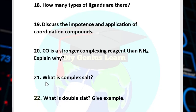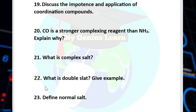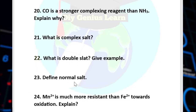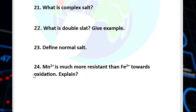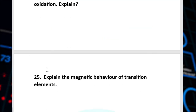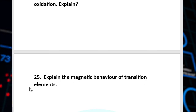Question number 21: What is a complex salt? Question number 22: What is a double salt? Give an example. Question number 23: Define normal salt. Question number 24: Manganese 2+ ion is much more resistant than ferrous 2+ ion to oxidation — explain why. Question number 25: Explain the magnetic behavior of transition elements.